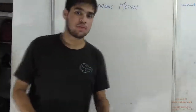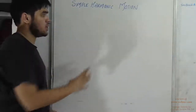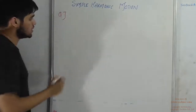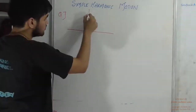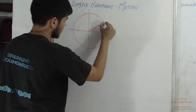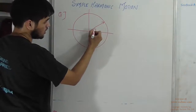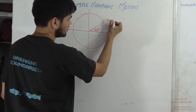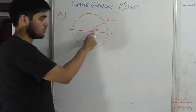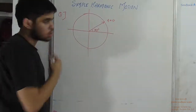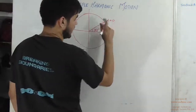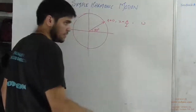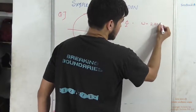Now we will do a question on phasor — the phase concept we studied earlier. A phase diagram is given. At time t = 0, the phasor points at an angle of 30 degrees from the horizontal axis, and at this point x = a/2. The value of omega is given as 2 radians per second.